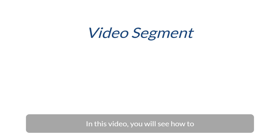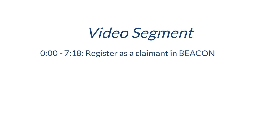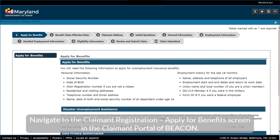In this video, you will see how to register as a claimant in Beacon. Navigate to the Claimant Registration, Apply for Benefits screen in the Claimant Portal of Beacon.